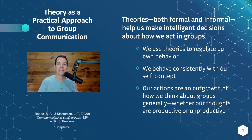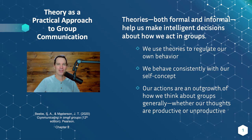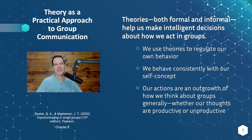Theories, both formal and informal, help us make intelligent decisions about how we act in groups. We use theories to regulate our own behavior. We behave consistently with our self-concept, which we mentioned in another video. Our actions are an outgrowth of how we think about groups generally, whether those thoughts are productive or not. So if you show up thinking a certain way about yourself and thinking about groups in a certain way, you are going to give off that vibe to the group. If you think 'I hate working in groups and I'm no good at this, it makes me anxious,' that's the vibe you'll give off. If, however, in contrast, you think 'I'm okay at this and I see the value in working in groups,' then you are going to come across in a whole different way. So those theories that we have, whether formal or informal, really do influence our actions.